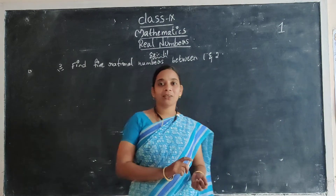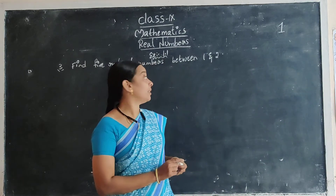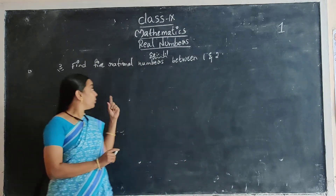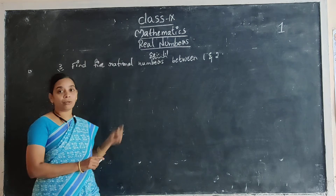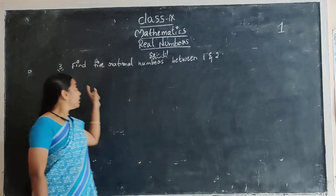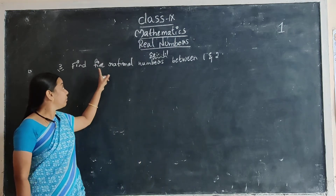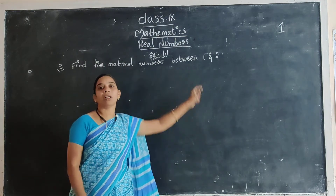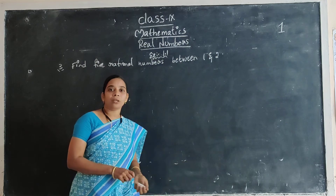Hello Senna, welcome back to the maths class. Yesterday's class we almost finished, now the third question. Find the five rational numbers between one and two.